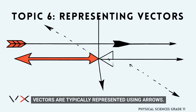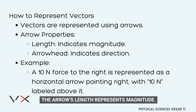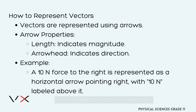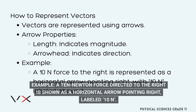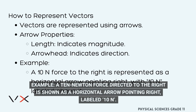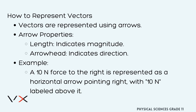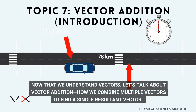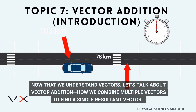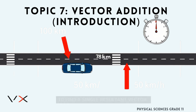Vectors are typically represented using arrows. The arrow's length represents magnitude, and the arrowhead indicates direction. For example, a 10 N force directed to the right is shown as a horizontal arrow pointing right, labeled 10 N. Now that we understand vectors, let's talk about vector addition — how we combine multiple vectors to find a single resultant vector.